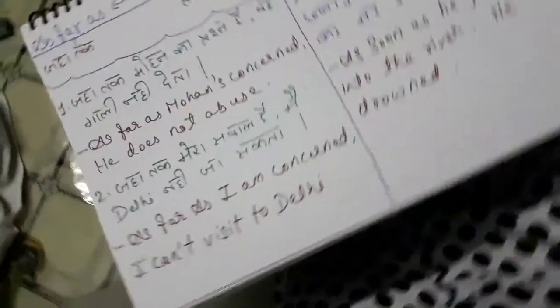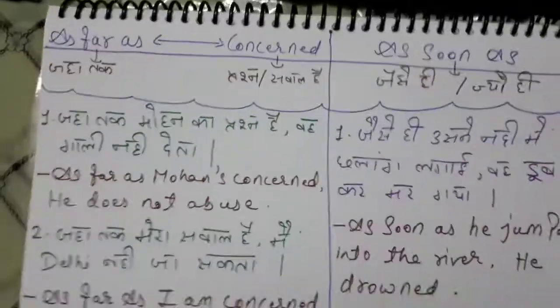Hey everyone, this is Radhika. In this video I'm going to tell you about conjunctions — 'as far as' and 'as soon as'. Both look similar, that's why I've made a combined video on them. So let's look at their examples one by one. Let's start.